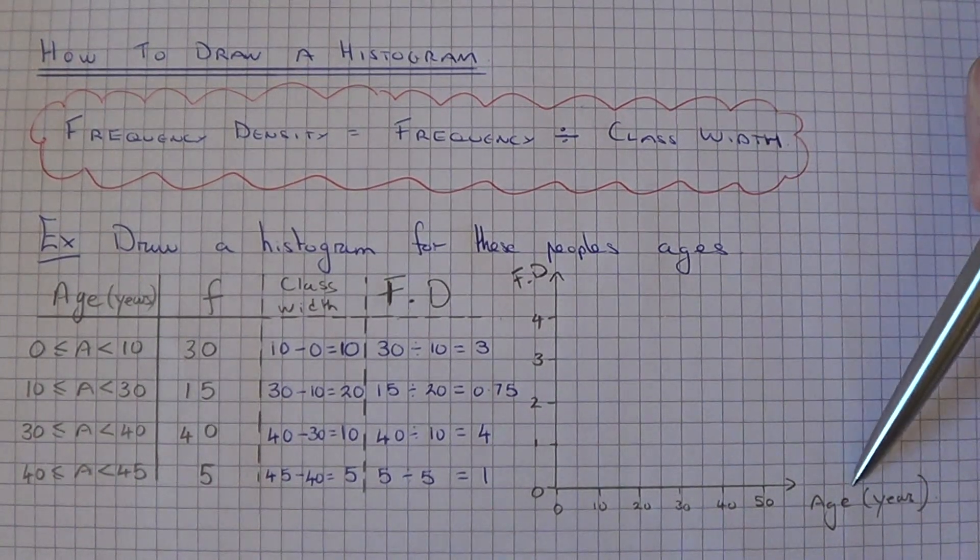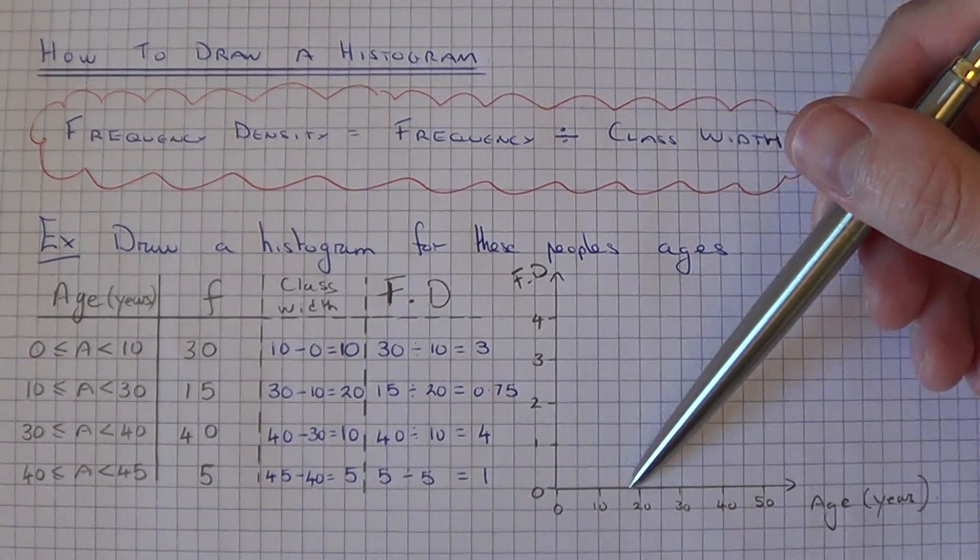Going across, we put the ages, so I've gone across in 10s.